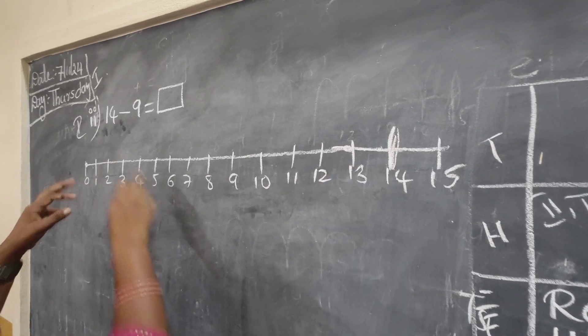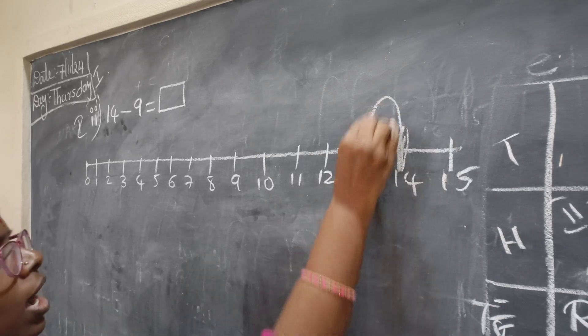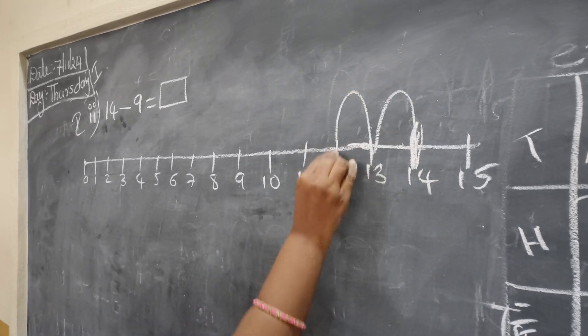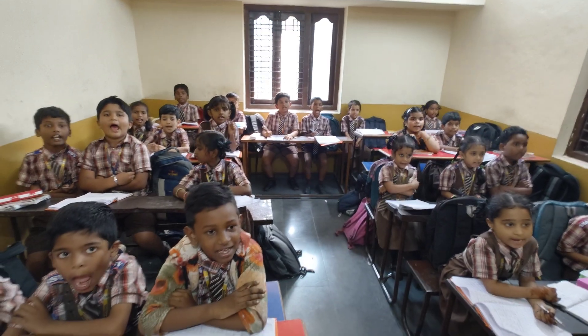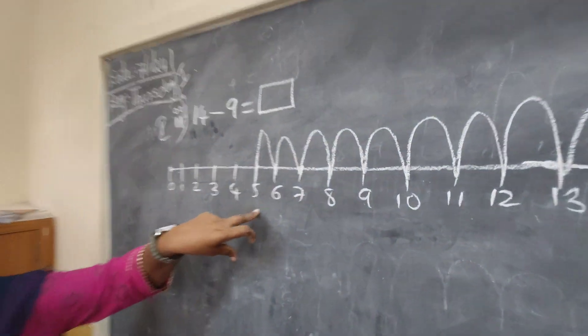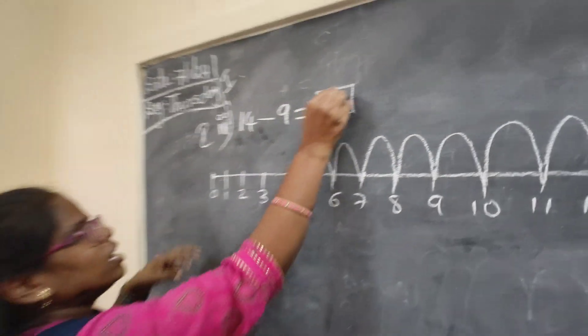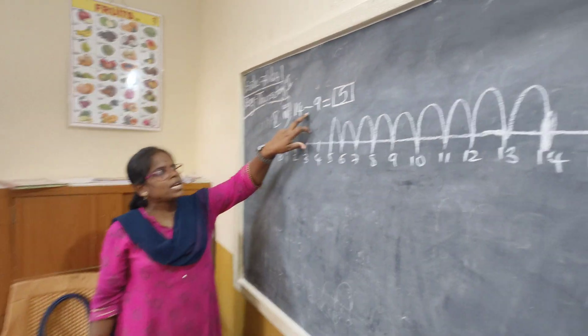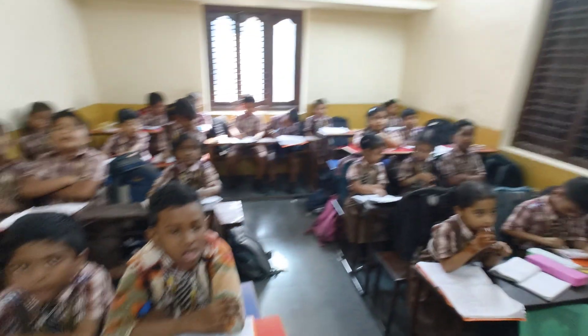Okay, 14. How many lines? 9. Okay, 1, 2, 3, 4, 5, 6, 7, 8, 9. What is this number? 5. Okay, the answer is 5. Now check once — 14 minus 9 is equal? 5. 14 minus 9 is equal? 5.